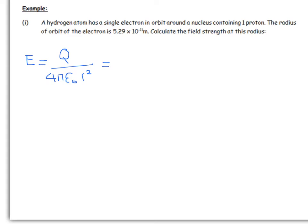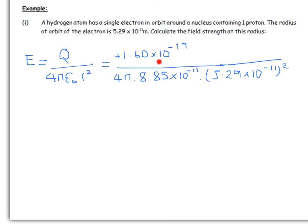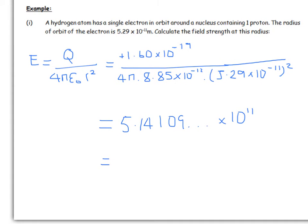Substituting in the numbers: the top line has the charge of the proton (remembering to include the positive sign), and the bottom has 4πε₀ and the distance squared. Putting those numbers into a calculator gives 5.14 × 10¹¹ N/C, given to three significant figures — which is the smallest number of significant figures in the question.